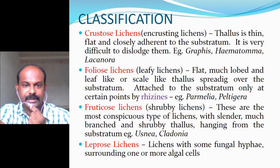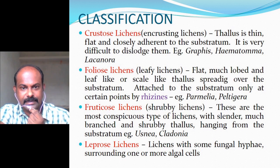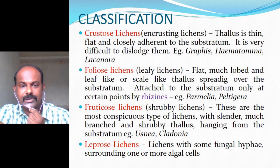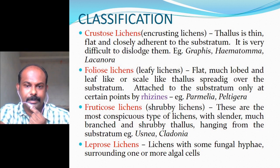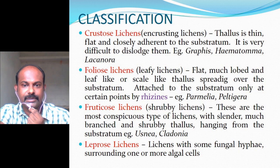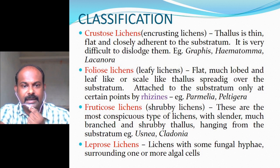Classification based on the nature of the thallus: lichens can be classified as Crustose lichens (also called encrusting lichens), Foliose lichens (also called leafy lichens), Fruticose lichens (also called shrubby lichens), and Leprose lichens. In Crustose lichens, the thallus is thin, flat, and closely adherent to the substrate and very difficult to dislodge. Examples are Graphis, Haematoma, and Lecanora.